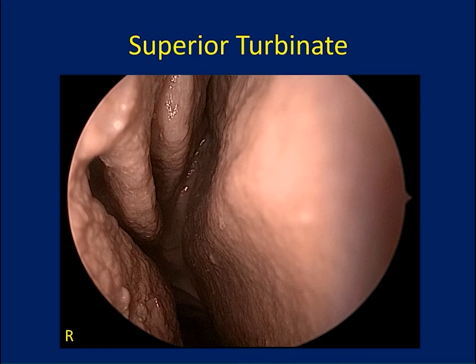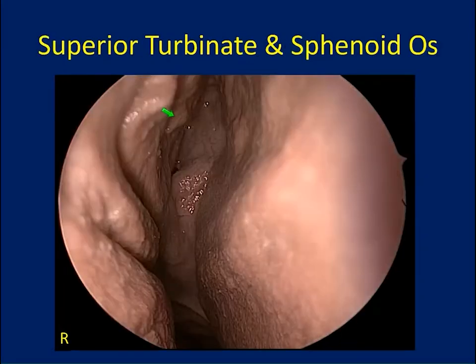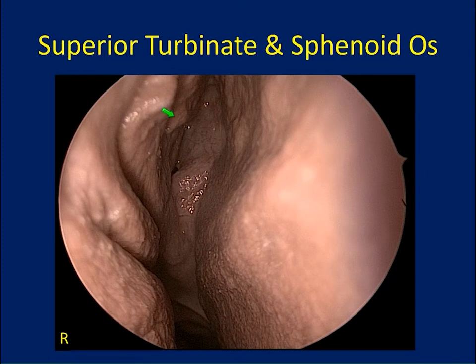The reason the superior turbinate is important is that if you identify the superior turbinate — which is the structure in the center of the view here — this allows you to identify your sphenoid ostium. The opening to the sphenoid sinus is always medial to the superior turbinate and is approximately at the mid-portion of the superior turbinate.